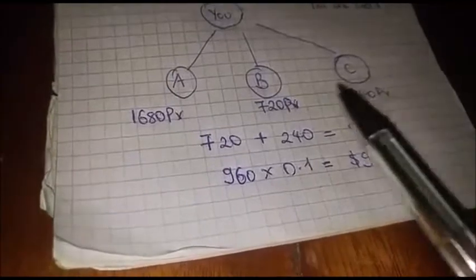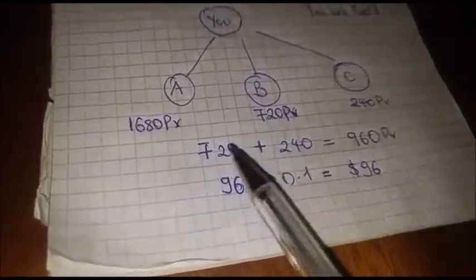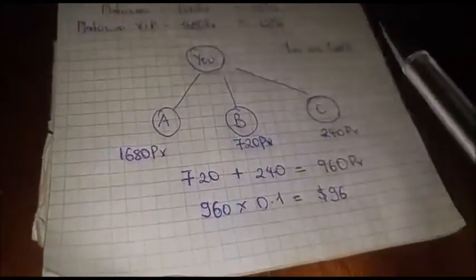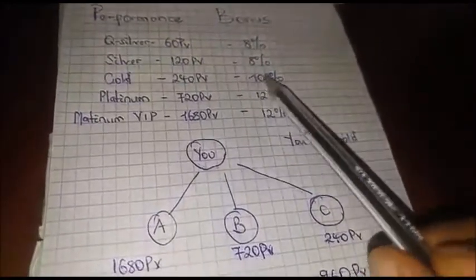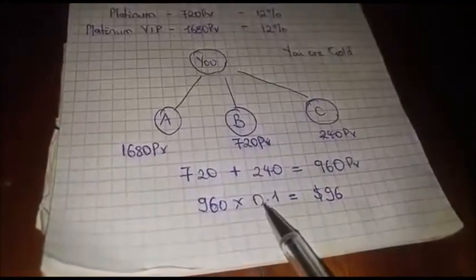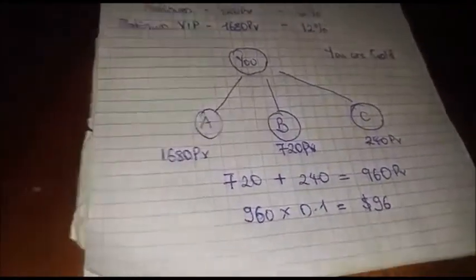How is it calculated? You sum up the PVs for the two weaker legs. In this case, 720 plus 240 is 960 PV. And because you're a gold distributor, you are making 10% performance bonus. So you multiply 960 PV times 10%, which is 0.1. That means for that week alone you've made 96 dollars.